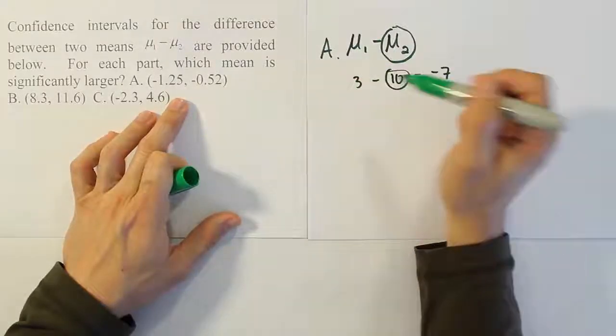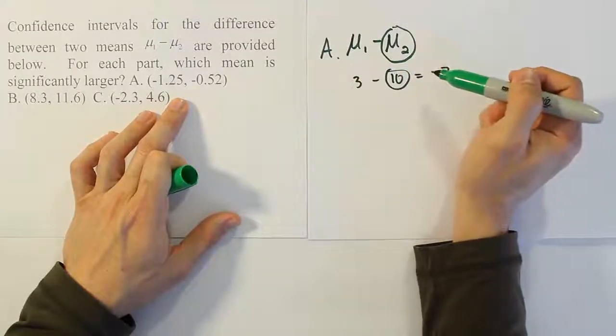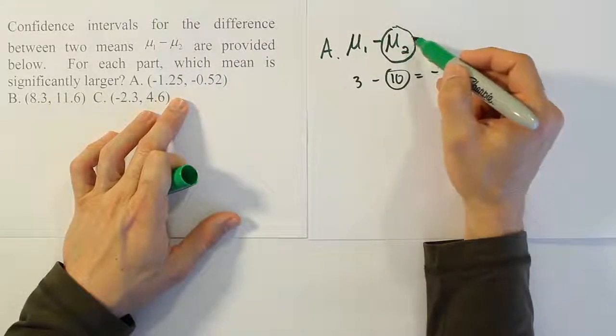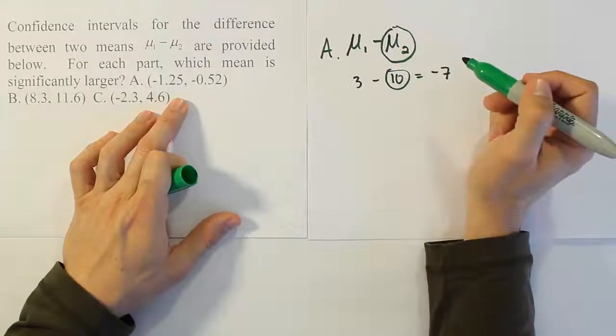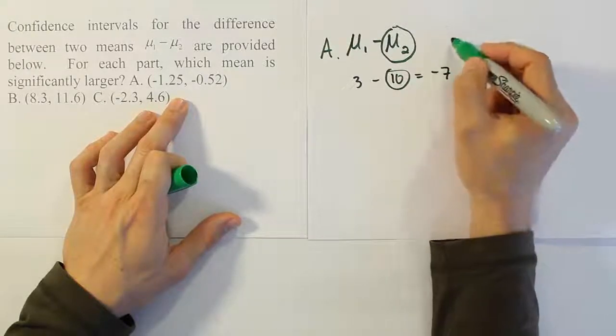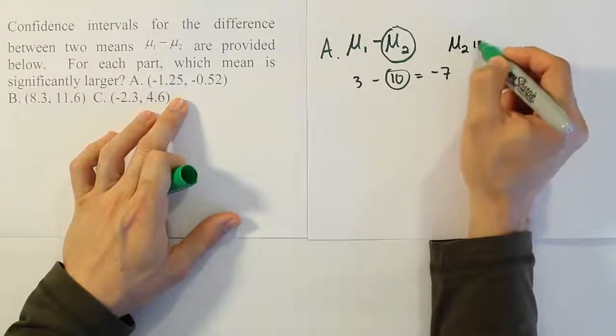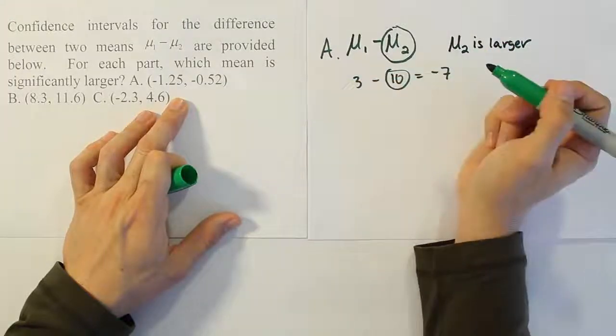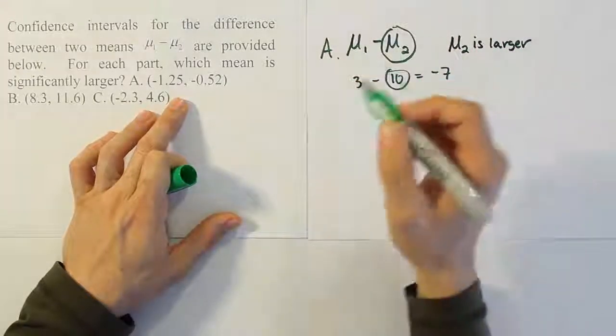Now, of course, if after you do the margin of error added and subtracted to that difference, you still end up with two negative values, it means that this number was significantly bigger than the first number. So basically what that says is that mean 2 is larger. That's significantly larger, right? That's why I'm saying it's larger.